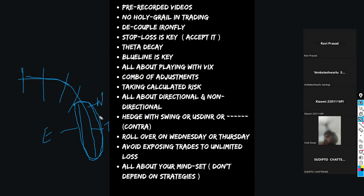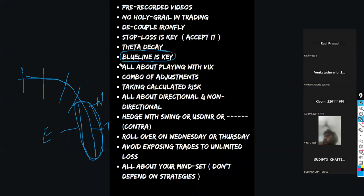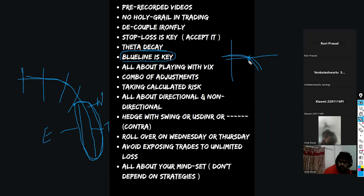Wednesday and Thursday are two critical days where your adjustment thought process must change and align to theta decay timing. For me, I rely on the blue line — I use the Sensibull tool. Without it, I honestly cannot trade on numbers alone. Students call me saying they got 18,000 or 19,000, but unless you show me the payoff diagram, I can't assess it. I need the payoff because that's where I see the blue line — where the current market price is and where my loss starts when the zero line is breached.